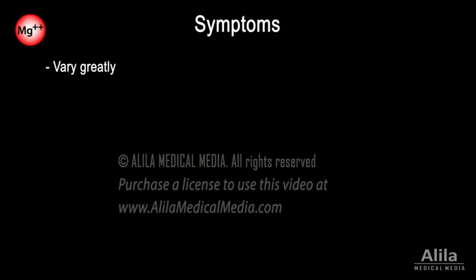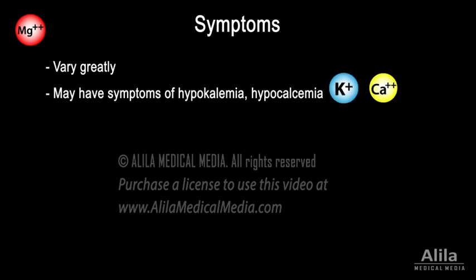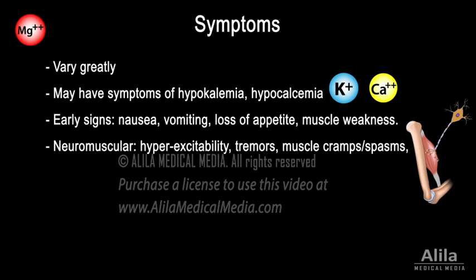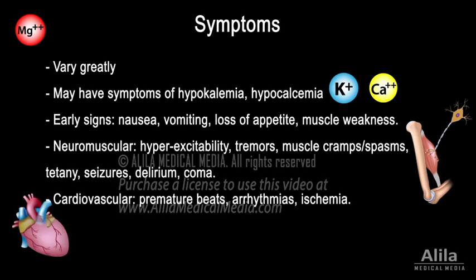Symptoms vary greatly from patient to patient. Because hypomagnesemia often leads to hypokalemia and/or hypocalcemia, patients may experience problems related to these conditions. Early signs include nausea, vomiting, loss of appetite, and muscle weakness. Neuromuscular symptoms range from hyperexcitability, tremors, muscle cramps and spasms, to tetany, seizures, delirium, and coma. Cardiovascular symptoms may include premature beats, arrhythmias, and ischemia. ECG changes are nonspecific, as these may result from hypokalemia or hypocalcemia.